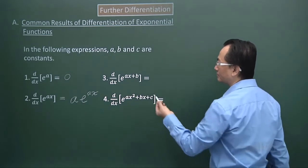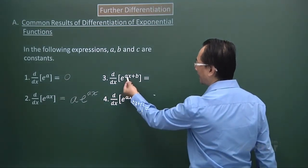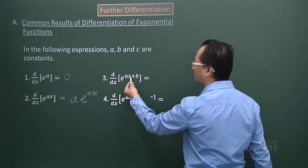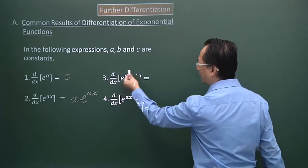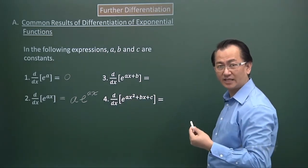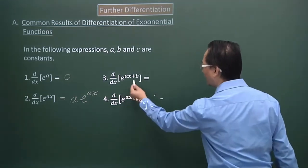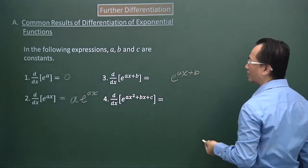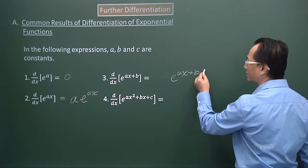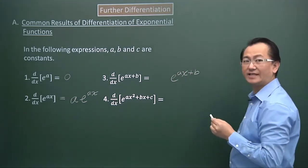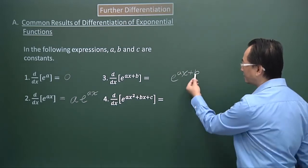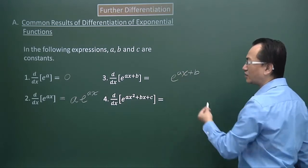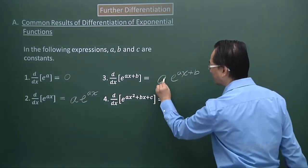For case three, the expression is slightly longer but still linear. The expression is e to the power of Ax plus B. When I differentiate that, that will be copied over. When I focus on the expression of the index and differentiate that, the constant term B will become zero. For the x term, I take the coefficient A to be the multiplier of this expression.